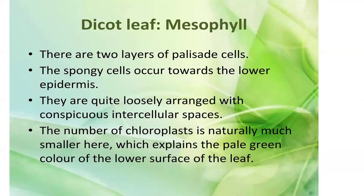The dorsal side of the dicot leaf appears more intensely green compared to the lower ventral side, because more chloroplasts are present in the palisade tissue on the dorsal side. The lower side has spongy tissue with fewer chloroplasts, which explains the pale green color of the lower surface of the leaves.